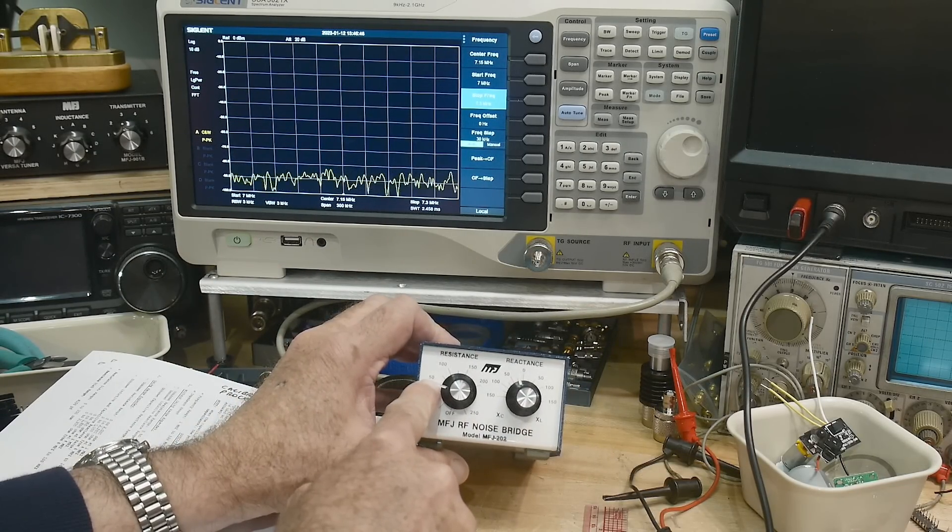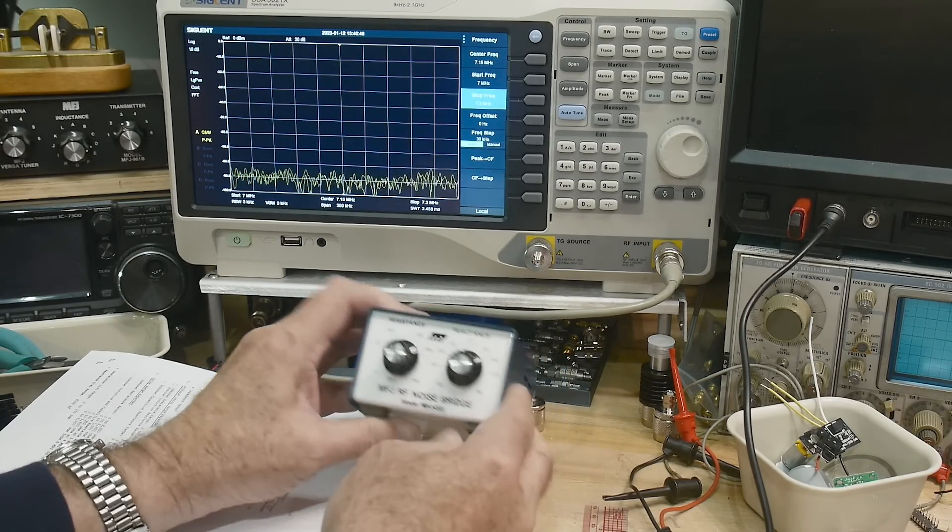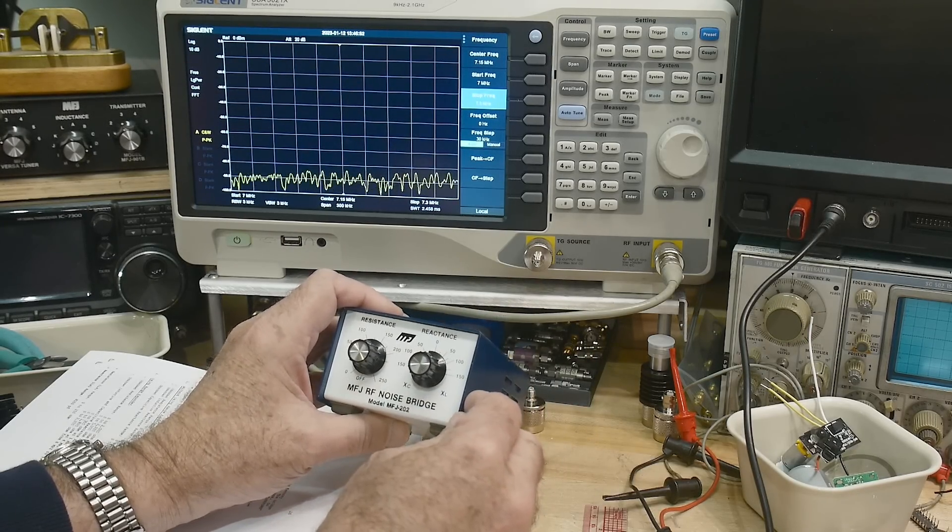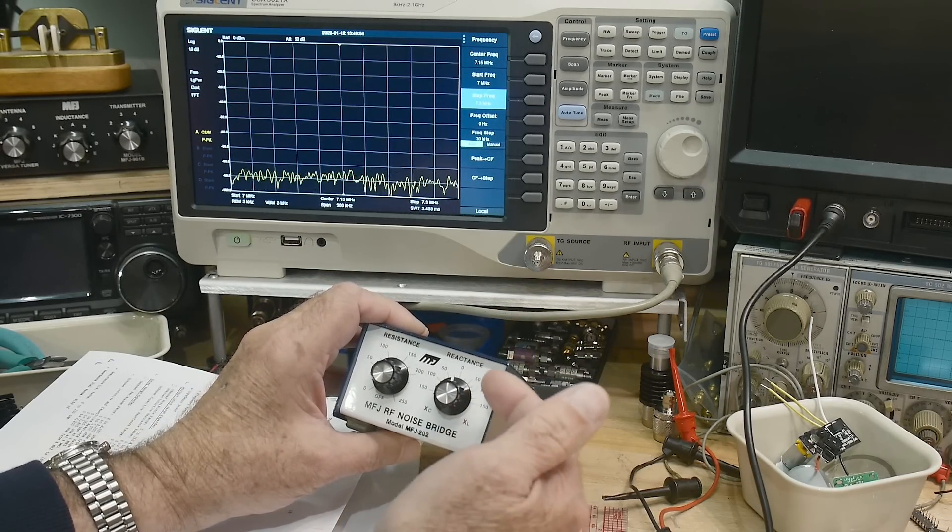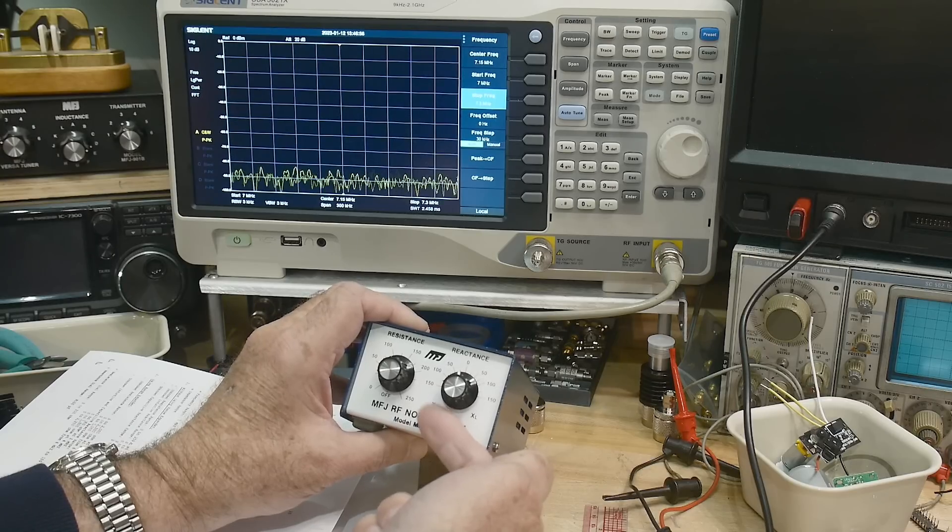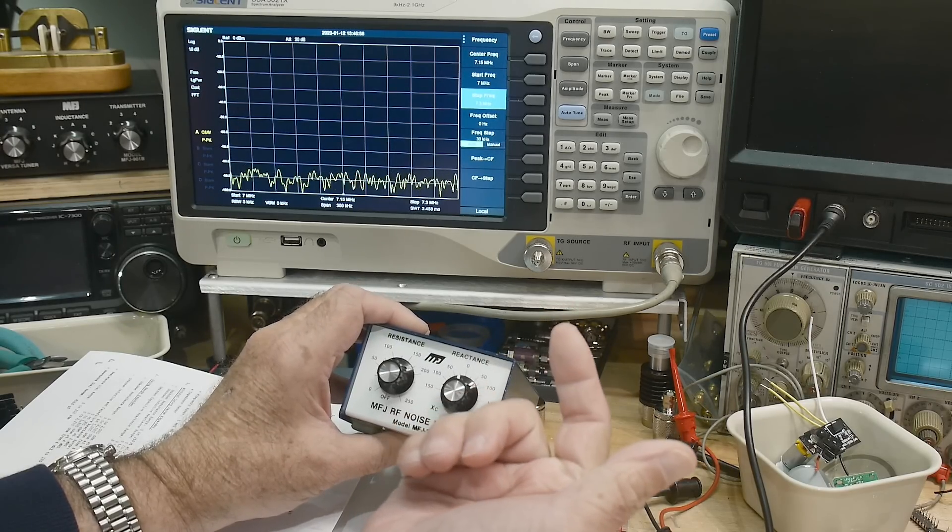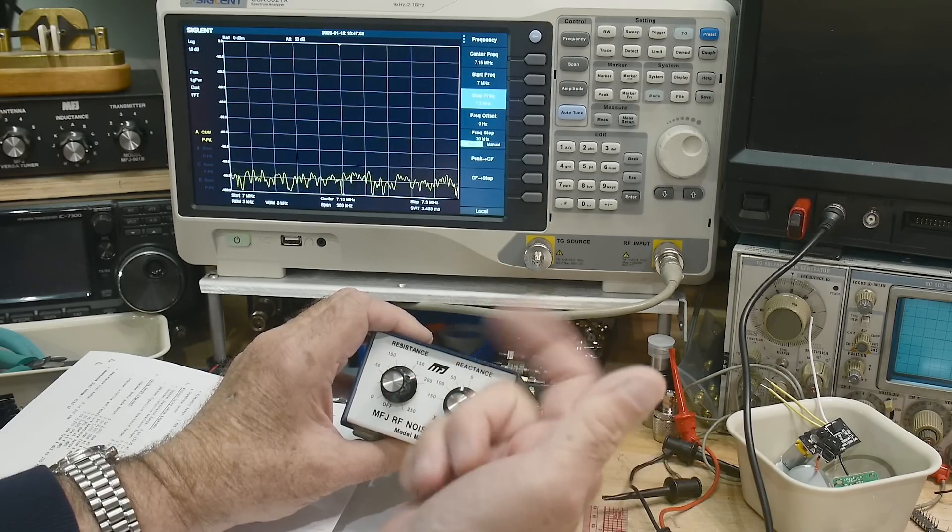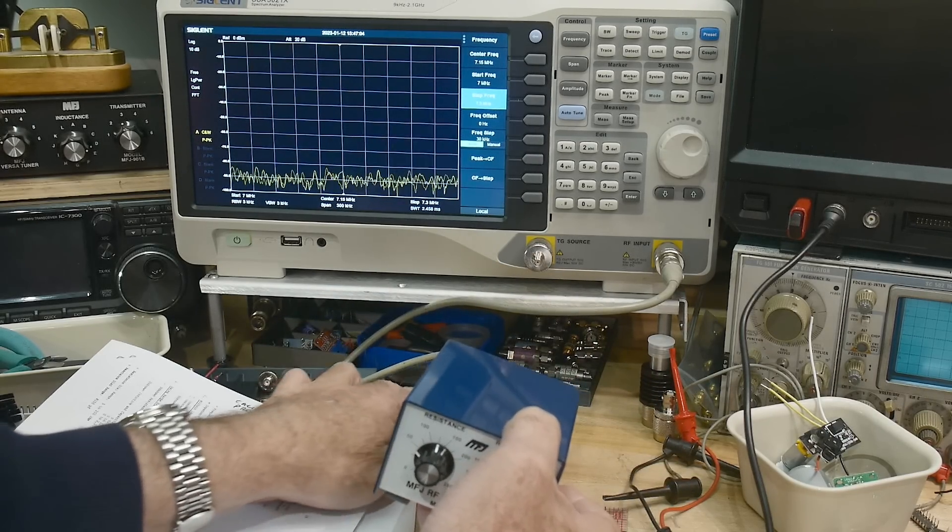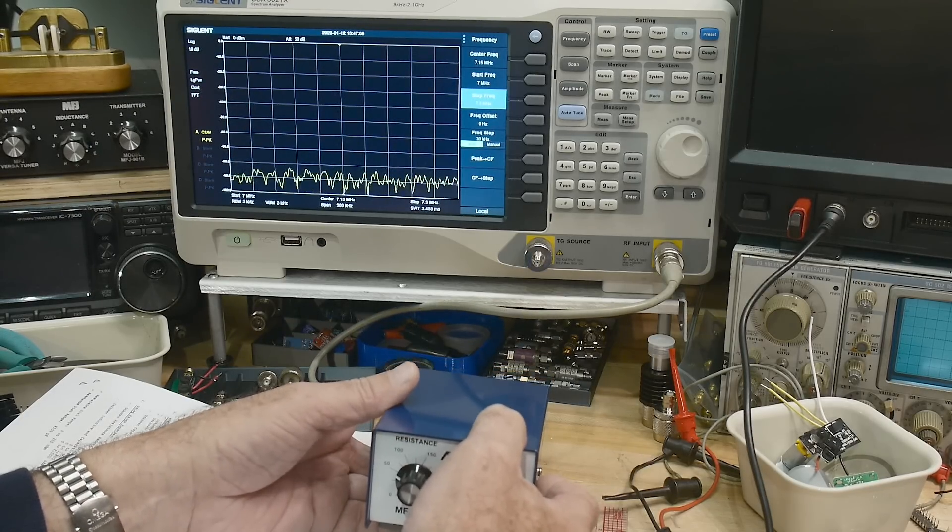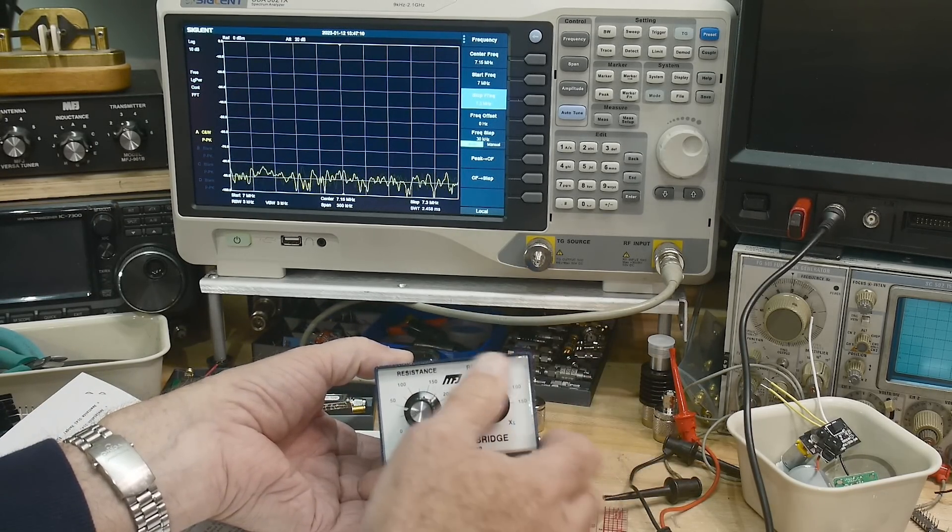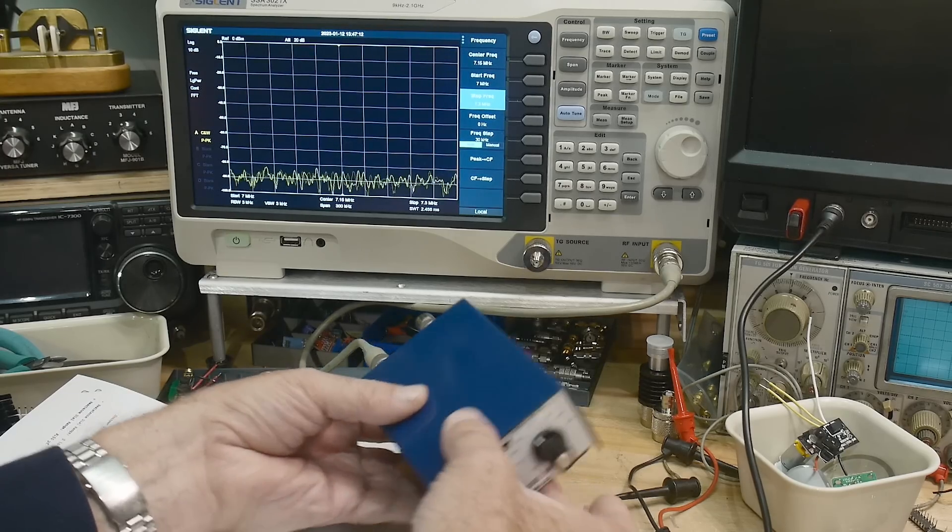And then just read it off. So this knob says 50, 50 ohms, and this knob says a little bit of capacitance. Maybe 20 puff of capacitance or 20 units. It says XC. I think that means 20. It's probably 20. It's some arbitrary, we'll just call it an arbitrary value of 20. But it's a little bit of capacitance. So what am I measuring?